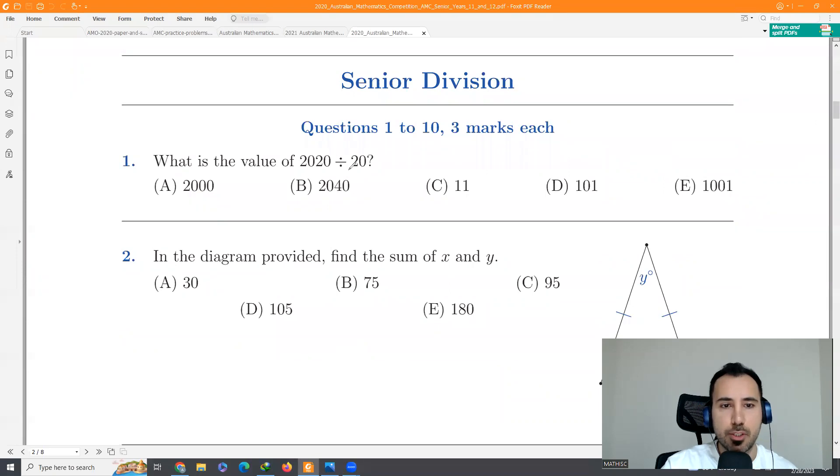So the first question, the easiest question, all we have to do is divide these two numbers together. Zeros are simplified. It will be 202 divided by 2. The answer will be 101. So D will be the answer. Very easy.